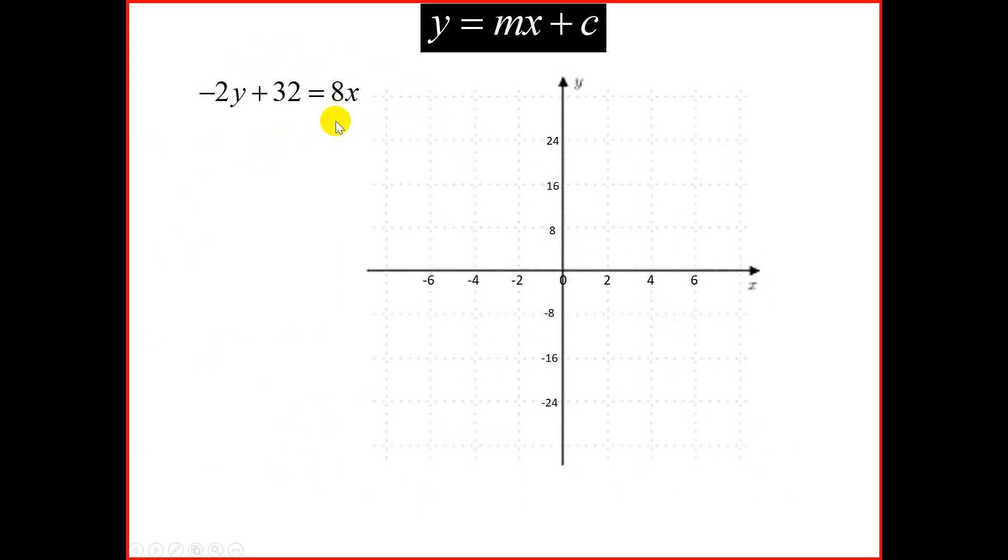We're looking at a graph not in standard form, minus 2y plus 32 is equal to 8x. We want to draw this graph. Firstly, to find the x-intercept, we let y to be 0.